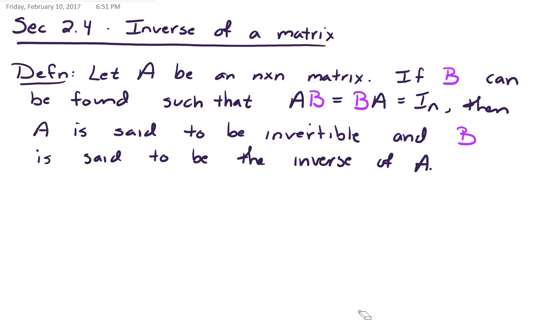Let A be an n by n matrix. If B can be found such that AB equals BA equals the n by n identity matrix, then A is said to be invertible and B is said to be the inverse of A.